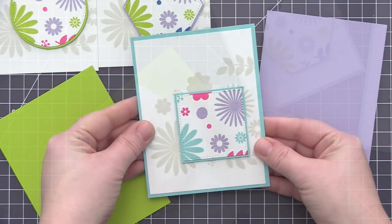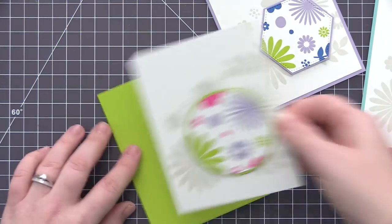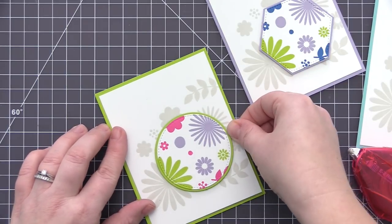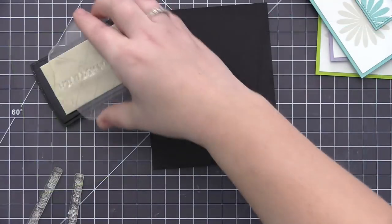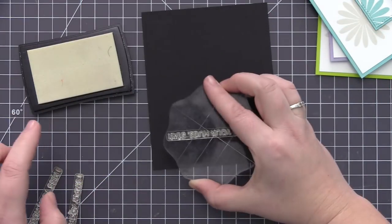Now you can mix and match the colors if you wanted to kind of do the mat behind the panel one color and then the card base another color. But I decided to keep mine all the exact same. So I have the same color of cardstock behind the stamped piece as well as for the card base.